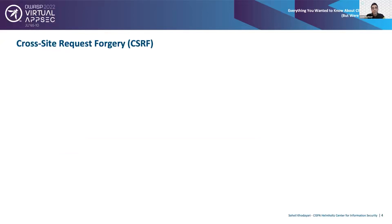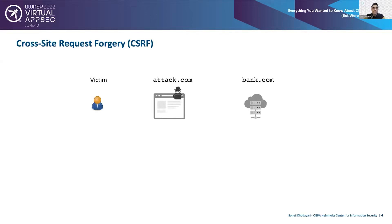To better understand this problem, let's look at an example of a very old but critical vulnerability: cross-site request forgery, or CSRF — a confused deputy security problem. In this attack, there are three main actors: a victim, an attacker controlling a malicious web page, and a target website, say bank.com. Attack.com, where the attacker is located, is a different web origin than bank.com — that's why the term cross-site exists in the attack title.